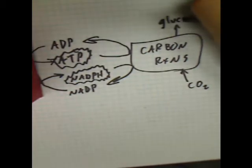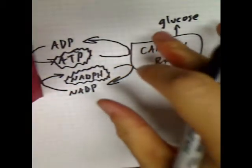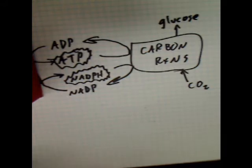They make the precursor to glucose called glyceraldehyde-3-phosphate, or G3P, and it's basically almost all of the work of making glucose. So basically, when you make G3P, you're basically there.